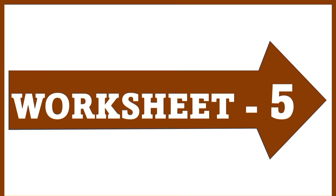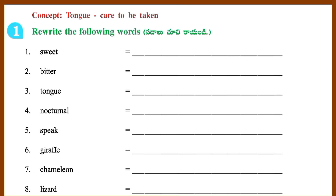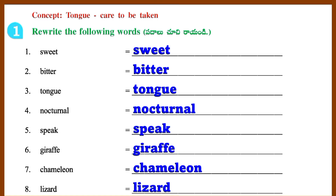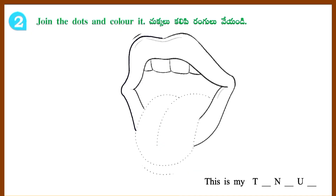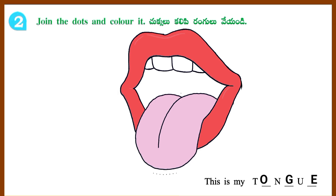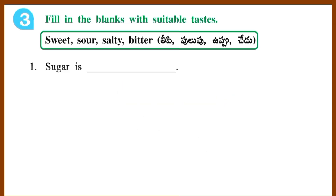Worksheet 5: Tongue. Care to be taken. Section 1: Rewrite the following words: Sweet, Bitter, Tongue, Nocturnal, Speak, Giraffe, Chameleon, Lizard. Section 2: Join the dots and color it.